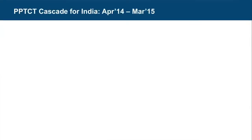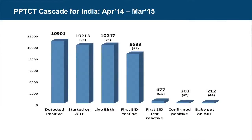Under the PMTCT program, we are currently implementing Option B+ in the country in all the states. Under Option B+, all HIV-positive pregnant women are initiated on lifelong triple drug ART, irrespective of their CD4 count, irrespective of their WHO clinical staging, and irrespective of the duration of pregnancy — even a woman identified in the first trimester is initiated on ART in the first trimester itself. The first line triple drug is TLE: tenofovir, lamivudine, and efavirenz.